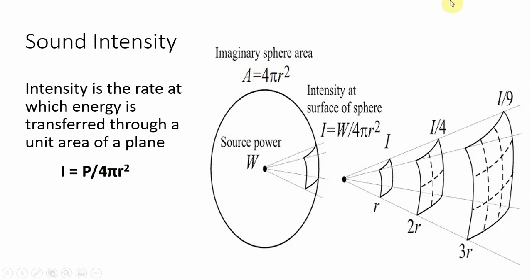When we think about the intensity of a sound, as it dissipates further and further — because we have that radius squared — the sound dissipates very quickly. When we go to two radii, we have a difference of four; at three radii, a difference of nine. The intensity drops off dramatically with increasing distance from the source.